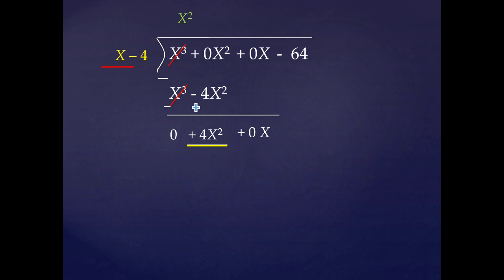Again we compare the first terms: x and 4x². If we multiply x by 4x, we will get 4x², that is why in the quotient we write +4x. Now we multiply both terms of the divisor by 4x, i.e. we multiply x and -4 by 4x. So 4x × x gives 4x² and 4x × (-4) gives -16x.